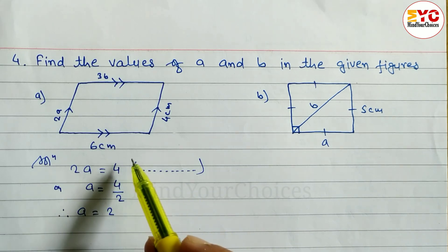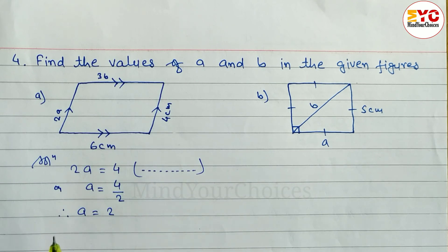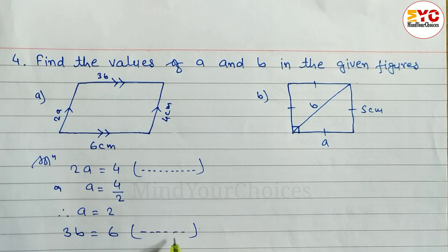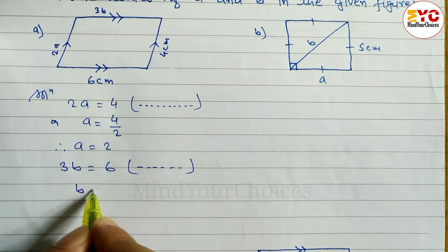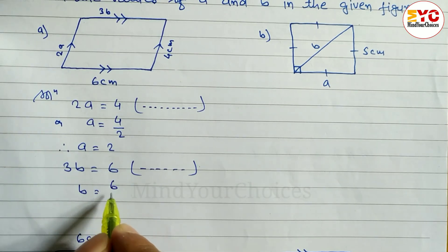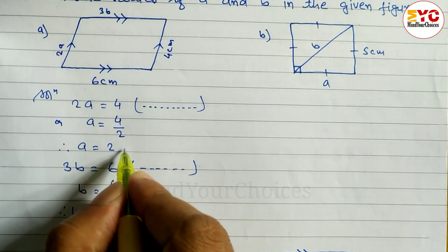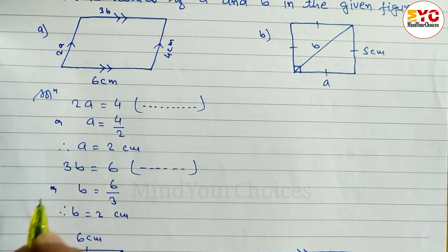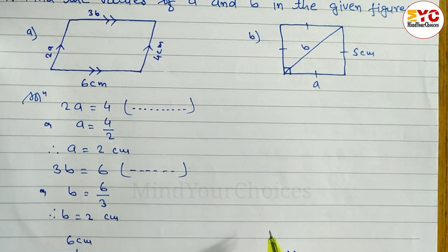Now how to find out the value of b. You can see here 3b is equal to 6. We can write 3b is equal to 6 — the reason is the same: opposite sides of a parallelogram are equal. We have to divide: 6 by 3. Therefore the value of b is also 2 centimeters. Do not forget to write centimeters.